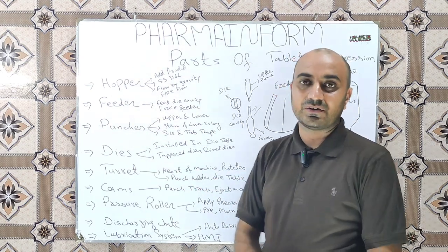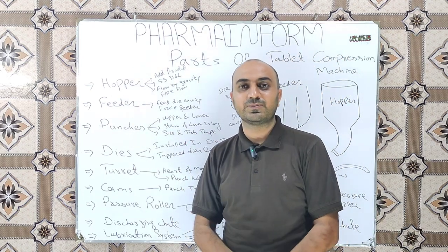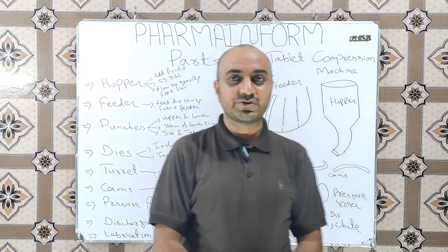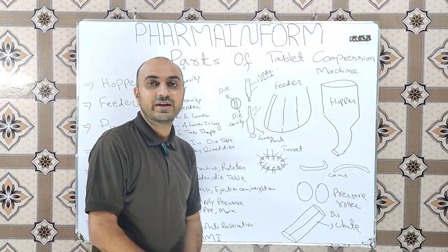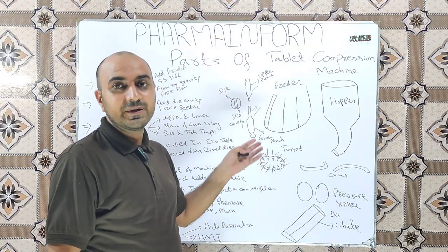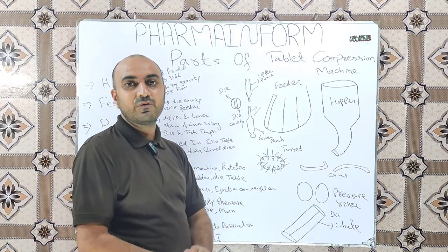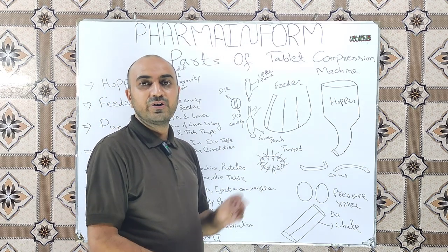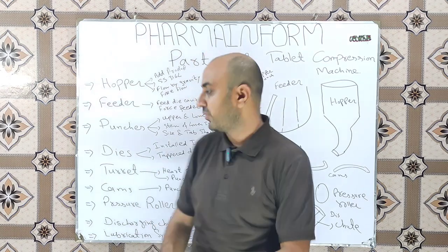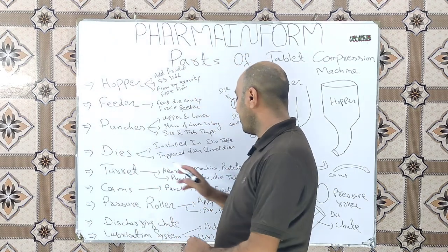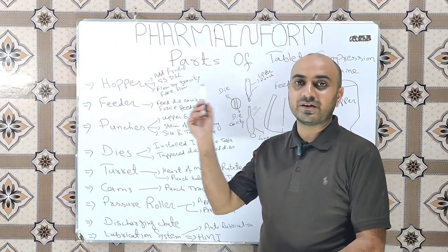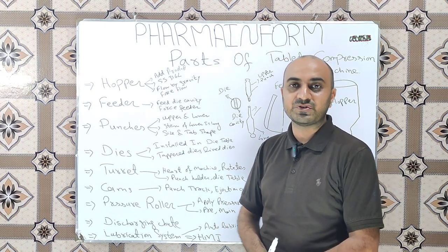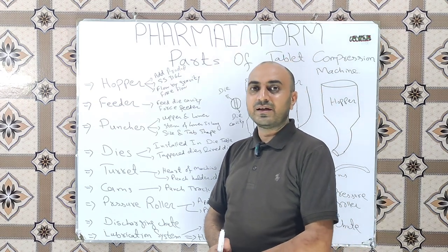The next component is the turret. The turret is basically the heart of the compression machine. It is the main component and includes the die table, holders for the upper punches, and holders for the lower punches. When the turret revolves, it essentially revolves all the punches and dies together.